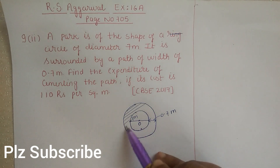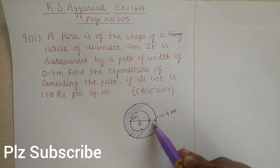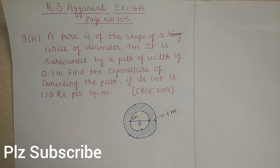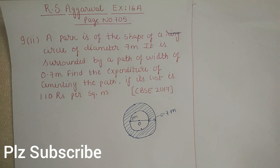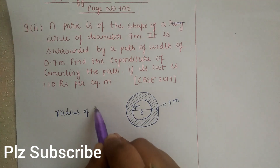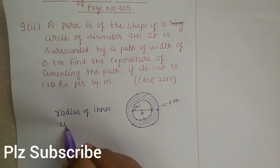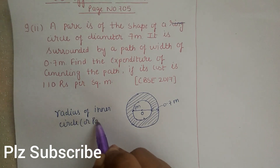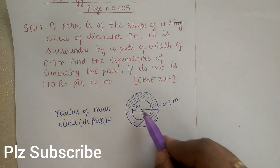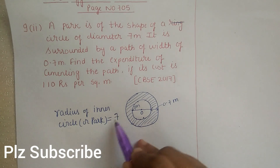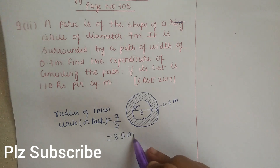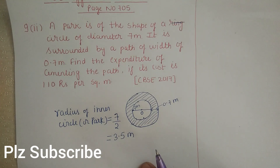We have to find the area of the shaded portion, which is the path, so that we can calculate the cost. First, find the radius of the inner circle — the inner circle represents the park. The park's diameter is given as 7 meters, so radius = diameter divided by 2 = 7 by 2. So the radius of the park is 3.5 meters.